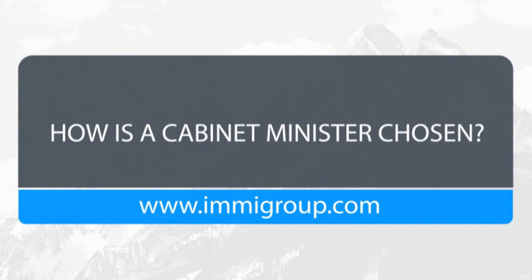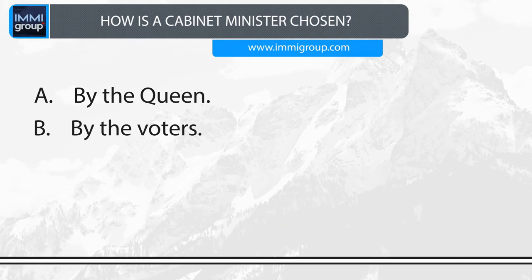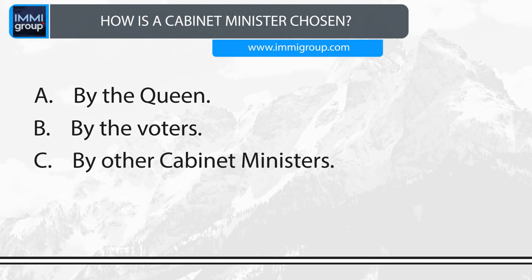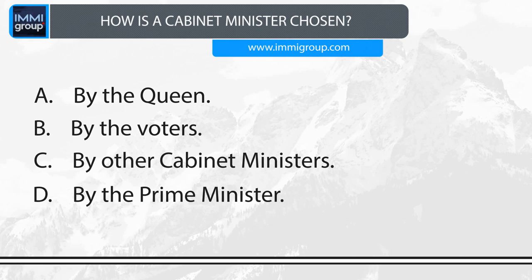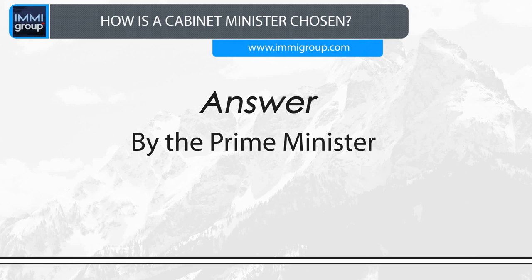How is a Cabinet Minister chosen? A. By the Queen. B. By the voters. C. By other Cabinet Ministers. D. By the Prime Minister. Answer: By the Prime Minister.